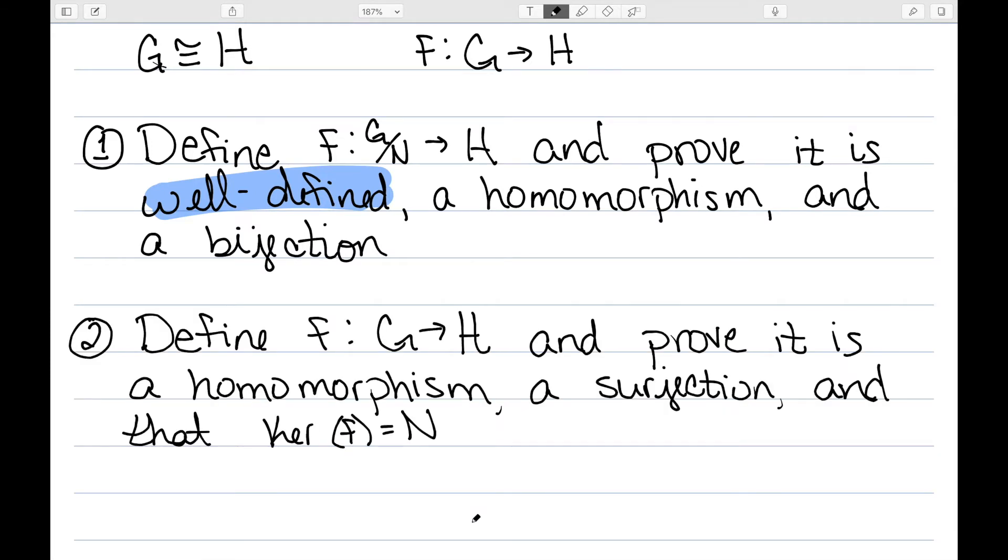The second way, the way we'll use, we're going to define a function F going from G to H. We need to prove it's a homomorphism, a surjection, and that the kernel of this function F is equal to N. And when we have that, we can use the fundamental homomorphism theorem to say that G mod N is isomorphic to H.